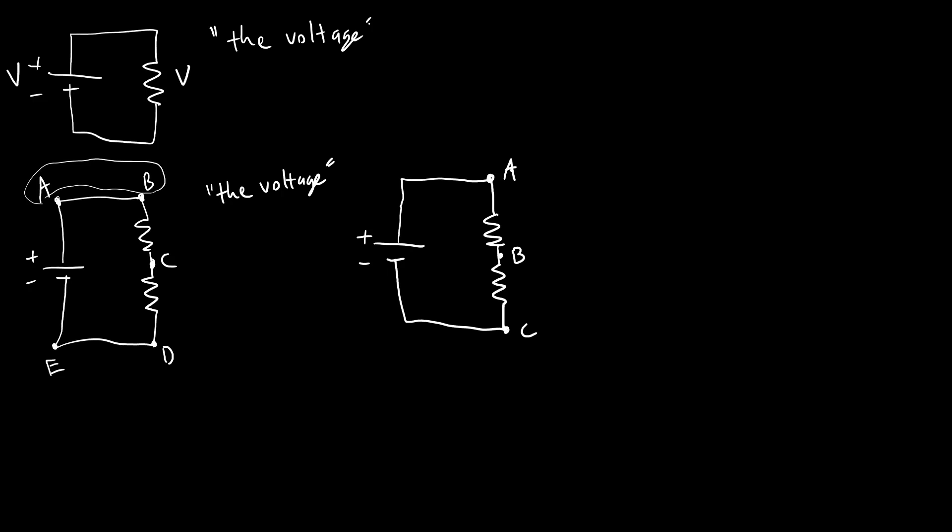So voltage is measured between any two points. So I can actually talk about three different voltages that I could measure in this circuit. I could measure the voltage between point A and B, which I would denote as VAB.